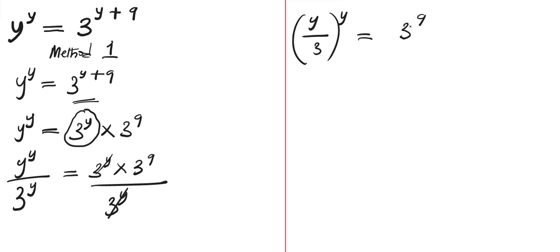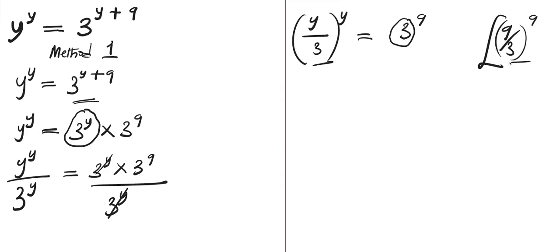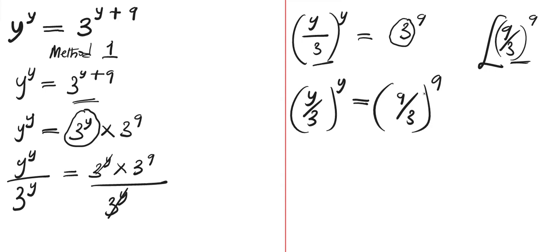The next step is for us to try and make the 3 be in the form of y over 3. The only way we can do that is we need a number that, divided by 3, still gives us 3. If you have 9 over 3, that is 3. So this can be replaced by 9 over 3 to the power of 9. We now have y over 3 to the power of y equals to 9 over 3 to the power of 9. The base is 3, so by comparison y equals to 9.